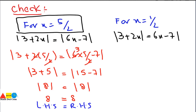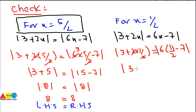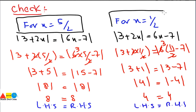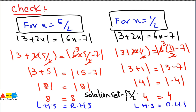For x = 1/2: |3 + 2(1/2)| = |6(1/2) − 7|. The 2s cancel: |3 + 1| = |3 − 7|, so |4| = |−4|, giving 4 = 4. Left-hand side equals right-hand side, confirming x = 1/2 is also a valid root. The solution set is {5/2, 1/2}.